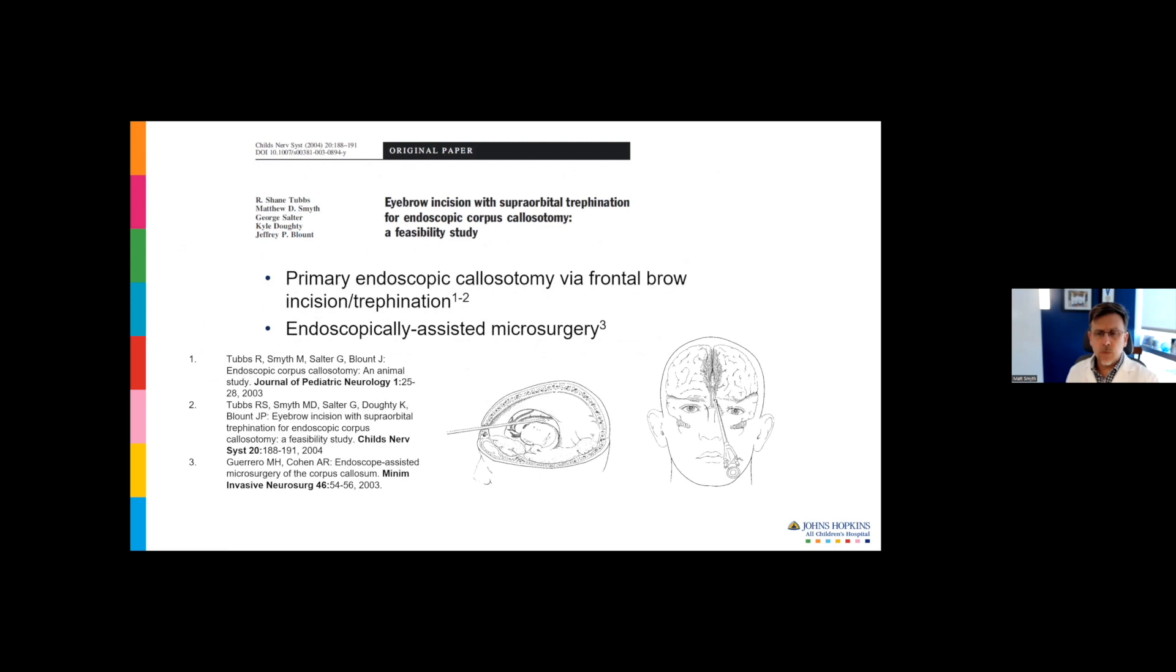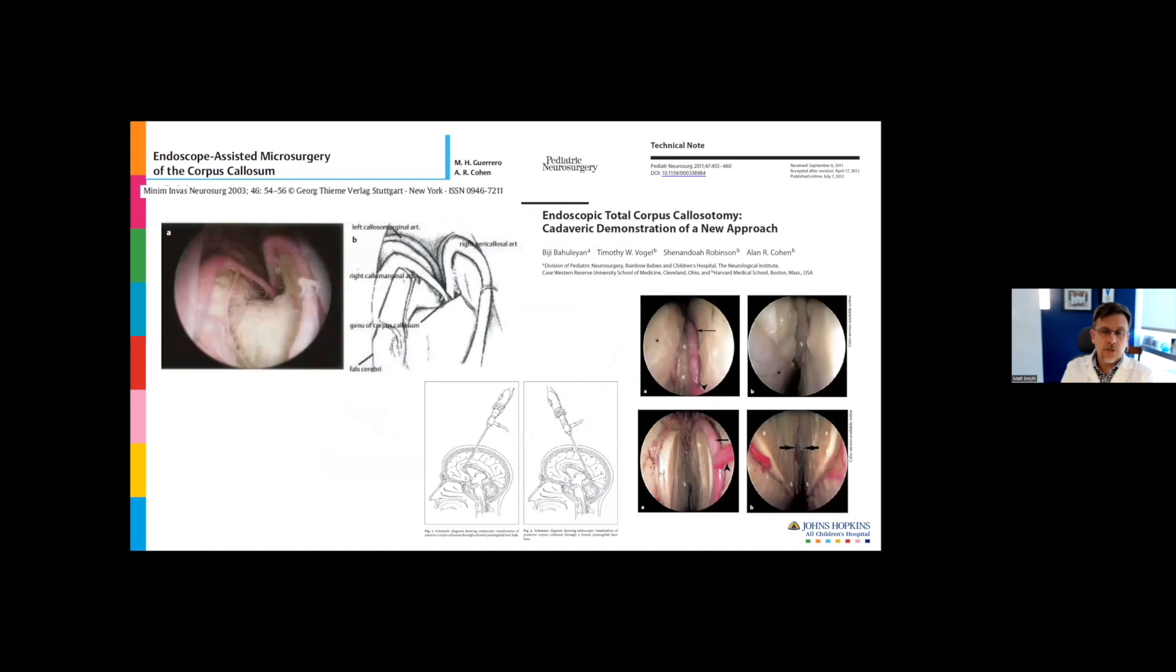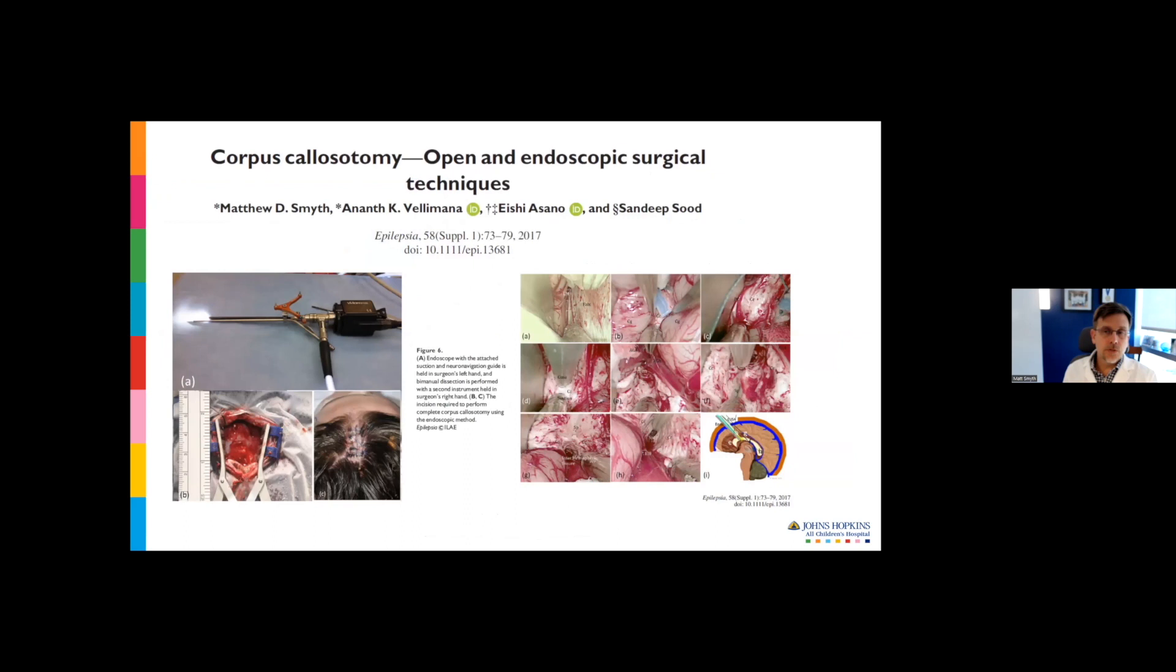As a fellow, we looked at the feasibility of using traditional endoscopes to perform endoscopic assisted callosotomy. We did work in cadaver heads and a live swine model. This is a low resolution endoscopic screenshot from a live pig model trying to divide the corpus callosum. I can tell you this is very technically challenging. There is a master of endoscopy, Al Cohen at Johns Hopkins Baltimore, and Sandeep Sood has actually taken this and run with it.